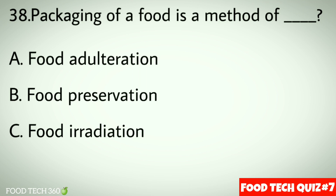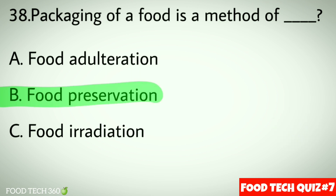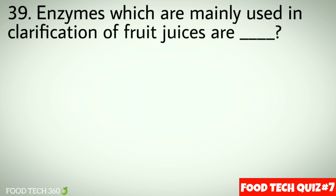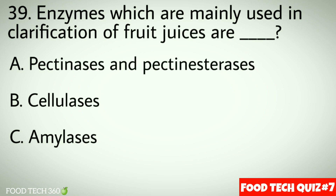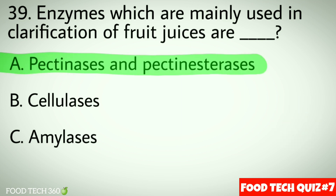Question number 38: Packaging of food is a method of — options: a) Food penetration, b) Food preservation, c) Food irradiation. Correct answer: b) Food preservation. Question number 39: Enzymes which are mainly used in clarification of fruit juices are — options: a) Pectinases and pectinesterases, b) Cellulases, c) Amylases. Correct answer: a) Pectinases and pectinesterases.